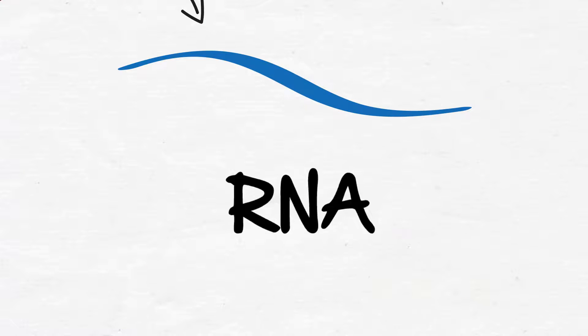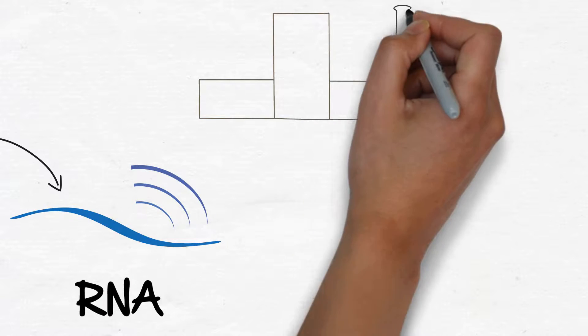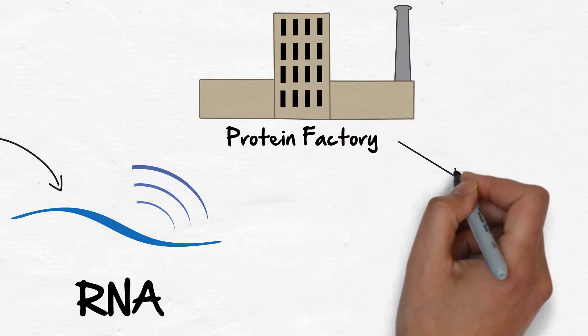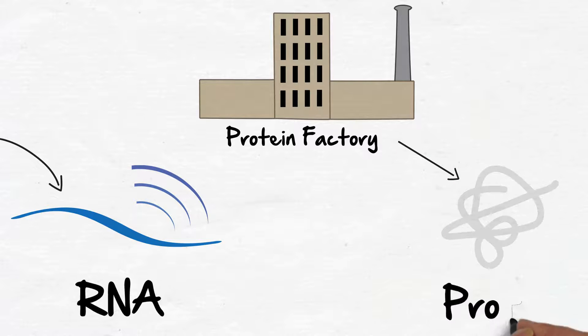This is messenger RNA. This messenger RNA code is read by the protein factories in the cell, which then make that particular protein.